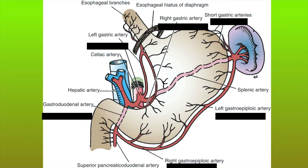Coming to the arterial supply of the stomach, the stomach gets its supply from the celiac artery which gives branches which are the left and right gastric arteries. The gastroduodenal artery again gives a branch called the right gastroepiploic artery.